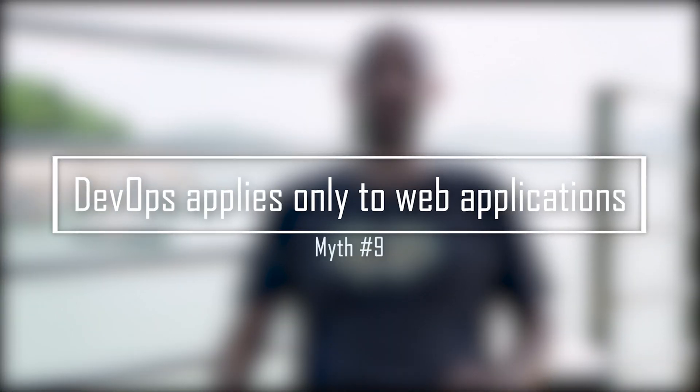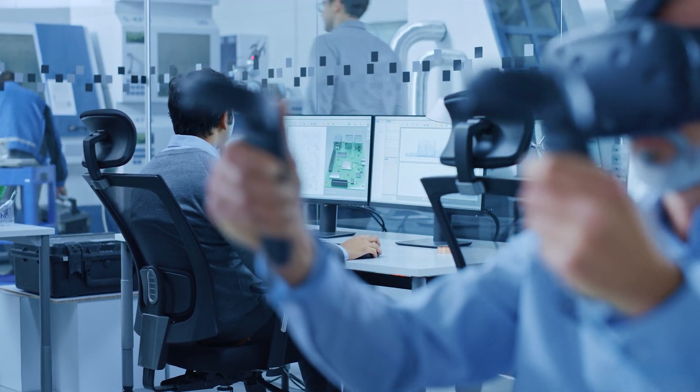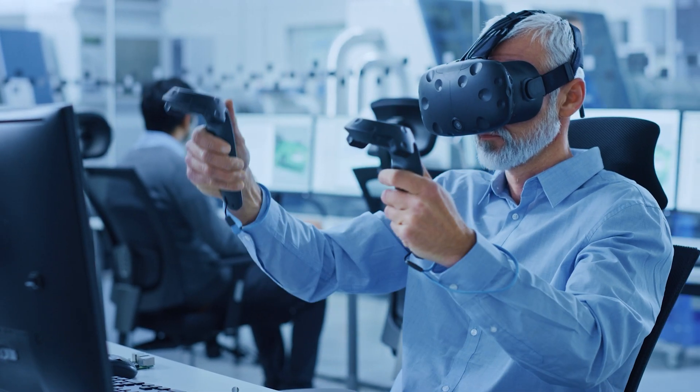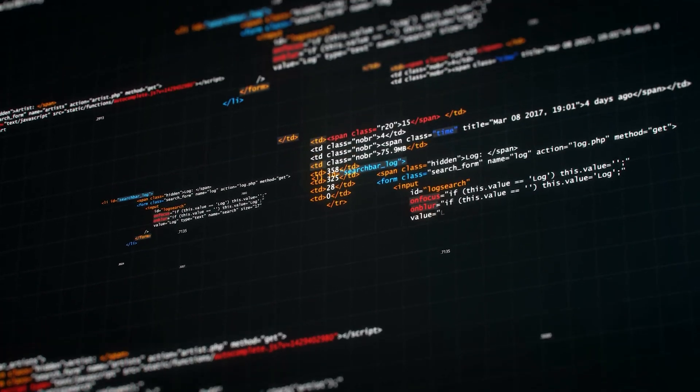Myth number nine: DevOps applies only to web applications. This is simply not true — DevOps can apply to every kind of software development: databases, backend, IoT, embedded software, even desktop software, and much more. The same principles can also be applied outside the software world, such as hardware development. The legacy of DevOps as we know it comes from factory floor optimization. Examples you find around are mostly based on web applications because web development is one of the most common types and where you see the effects of DevOps most quickly, but that doesn't mean DevOps can't be used in any other kind of project.